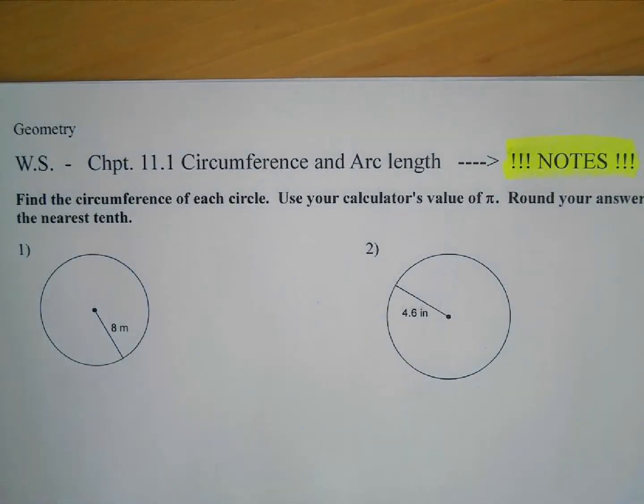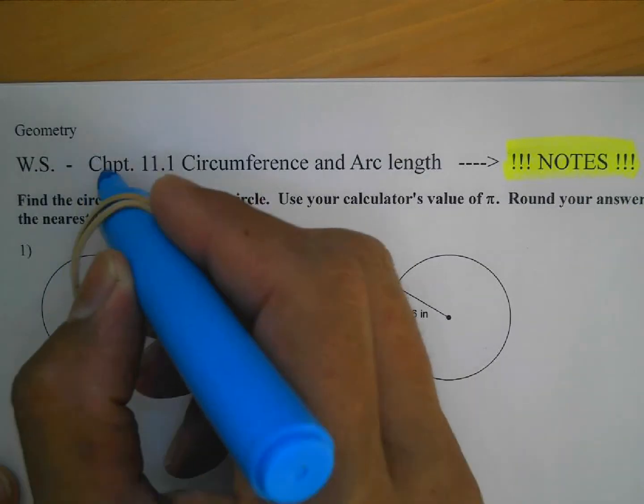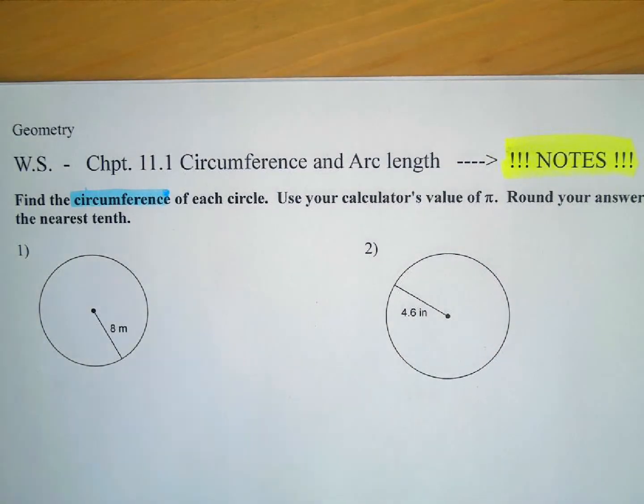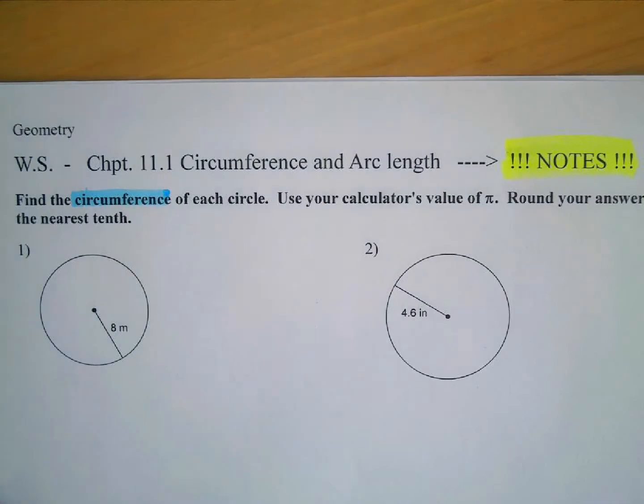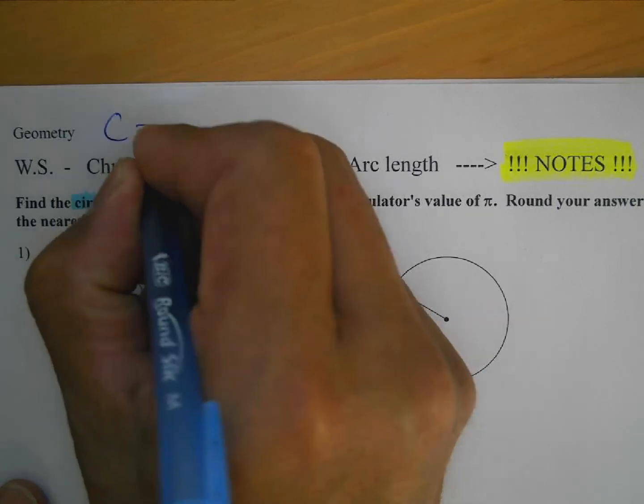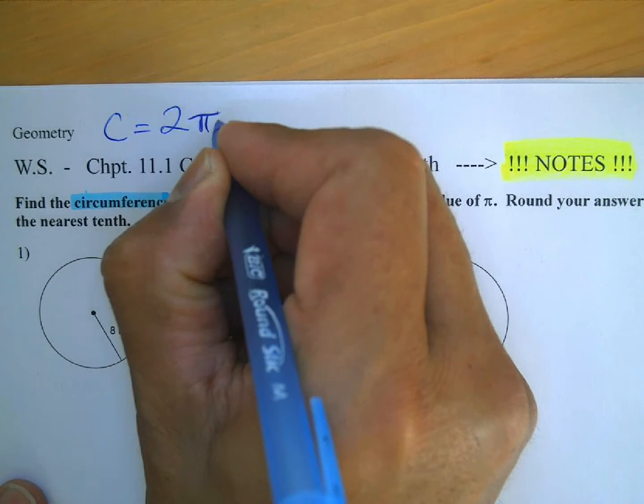Okay, we're being asked to find the circumference. For circumference, we're going to use one of two formulas. There's two formulas. We're going to use this one: C is equal to 2 pi R.